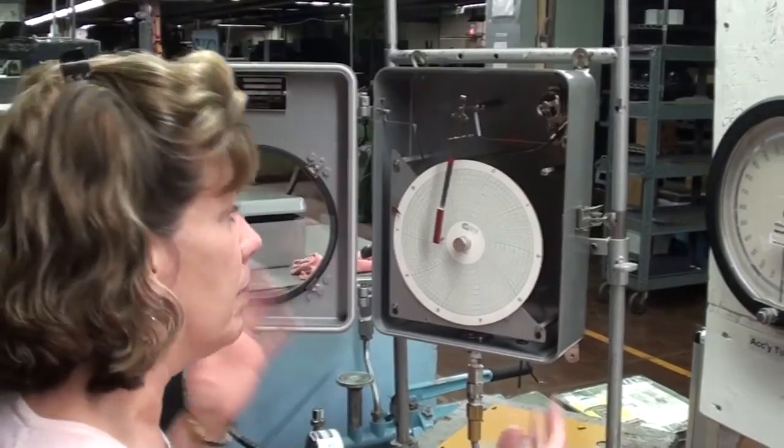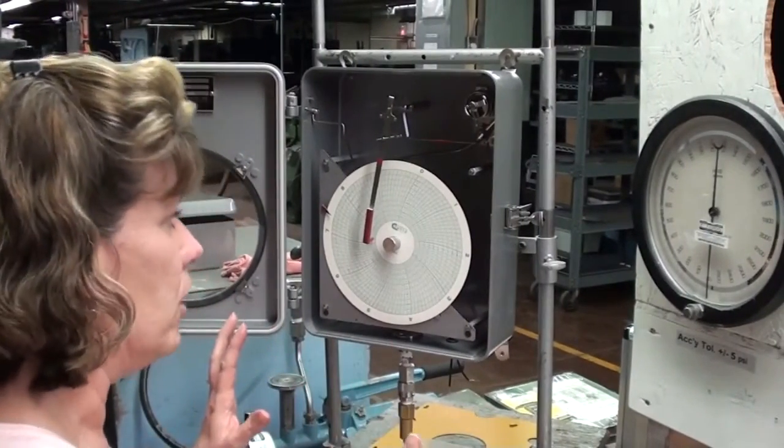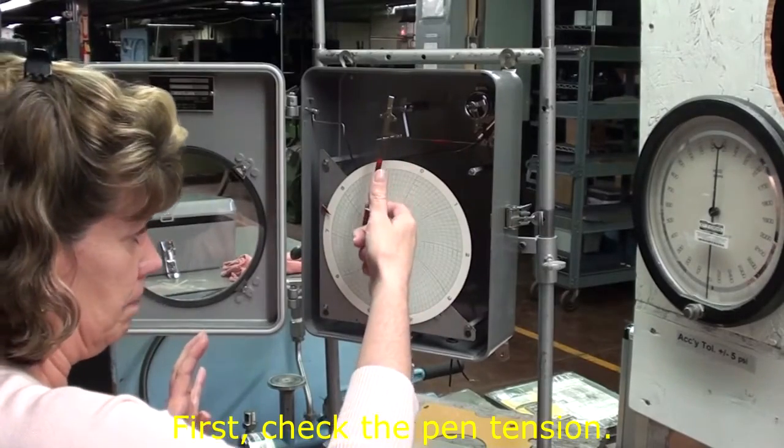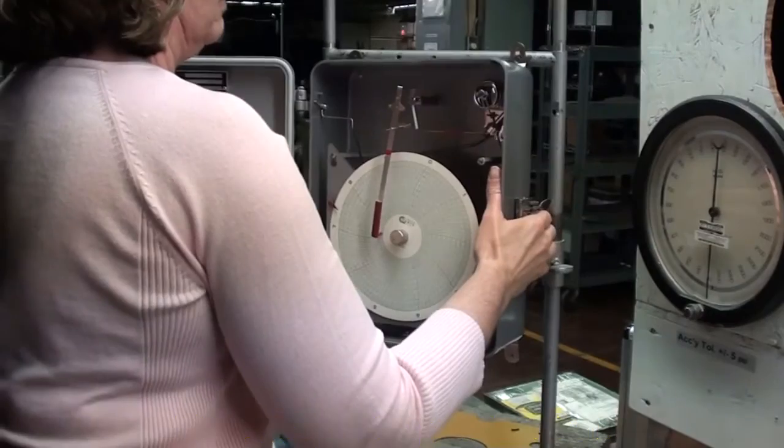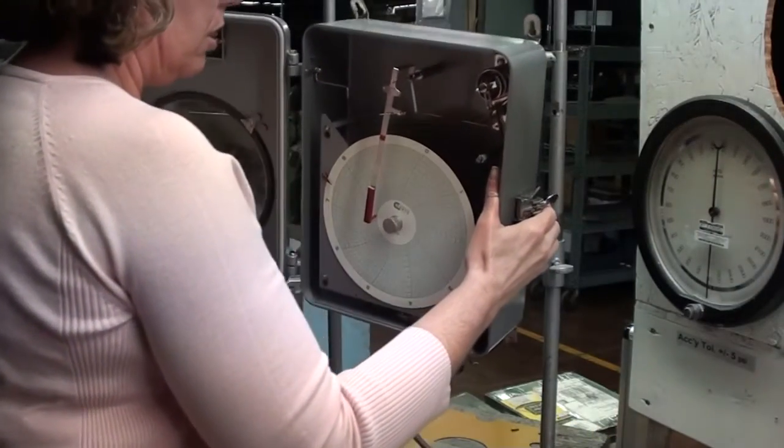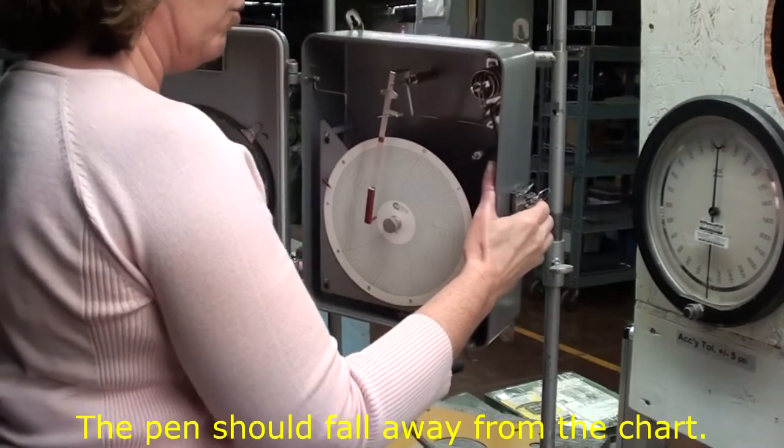The first thing that you want to do in calibrating a pressure recorder, or any recorder for that matter, is check your pin tension. You should tilt the recorder about this much and the pin should fall away from the chart.